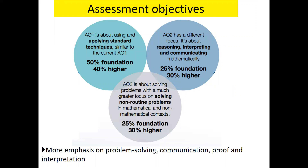There are three different assessment objectives that you are tested on. AO1 is about applying the standard techniques to mathematics — that's 50% of the Foundation and 40% of the Higher. AO2 is about reasoning, interpreting, and communicating — that's 25% of the Foundation and 30% of the Higher.